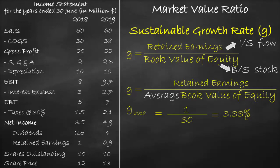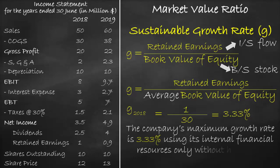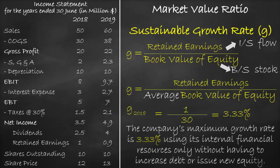The unit of sustainable growth rate is a percentage. This means that the company's maximum growth rate is 3.33% using its internal financial resources only, without having an increase in debt or issuing new equity. The higher the sustainable growth rate, the better.